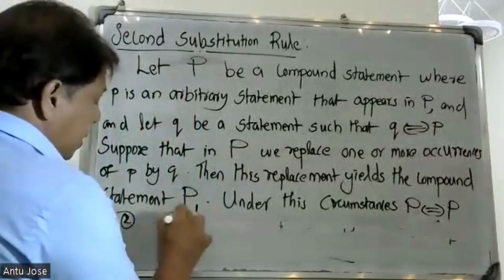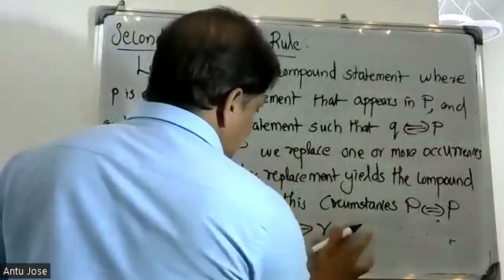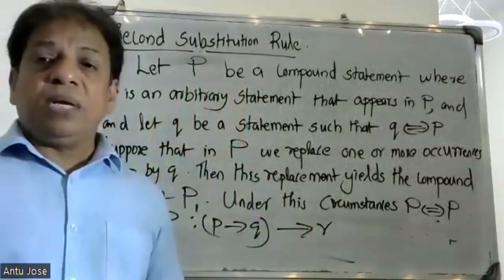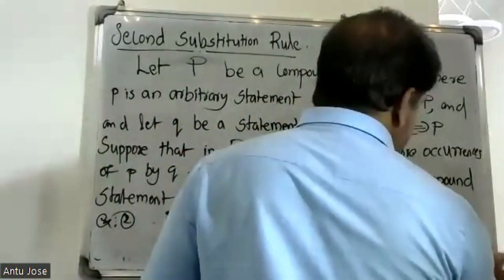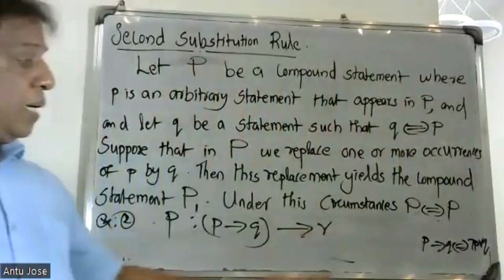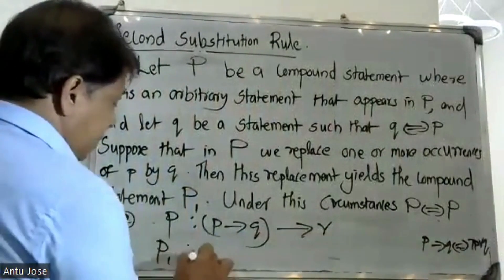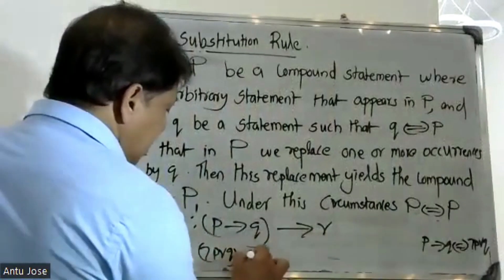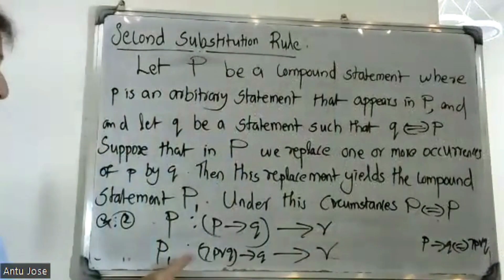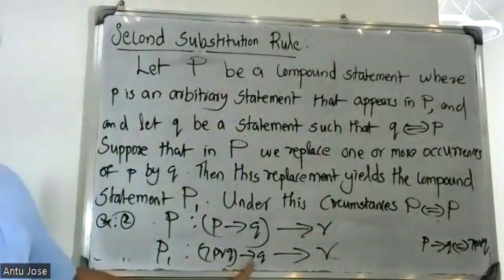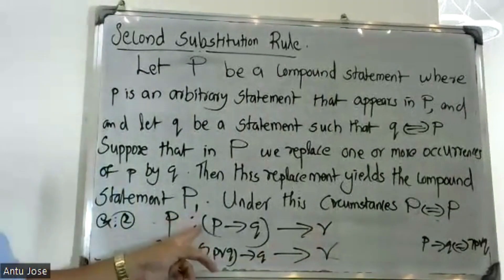Consider: P conditional (P and Q) conditional R. Here P and Q are compound statements. We know that P conditional Q is equal to negation P or Q. So P conditional Q equals negation P, and P and Q conditional R gives condition Q.